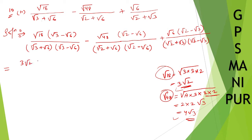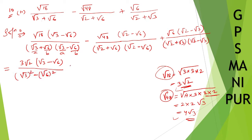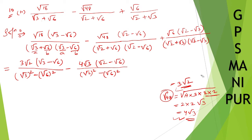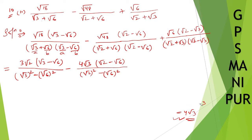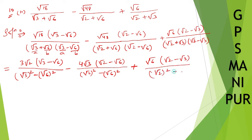So here: 3 root 2 into root 3 minus root 6, divided by A plus B into A minus B, which equals A squared minus B squared. For the next term, 4 root 3 into root 2 minus root 6, divided by A squared minus B squared. And plus root 6 into root 2 minus root 3, divided by A squared minus B squared.